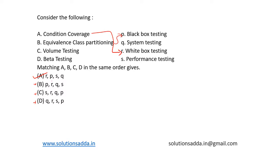For option C, volume testing checks the system performance with increasing the volume of data in the database. This is actually a type of performance testing, so C is mapped to S — this is also correct.